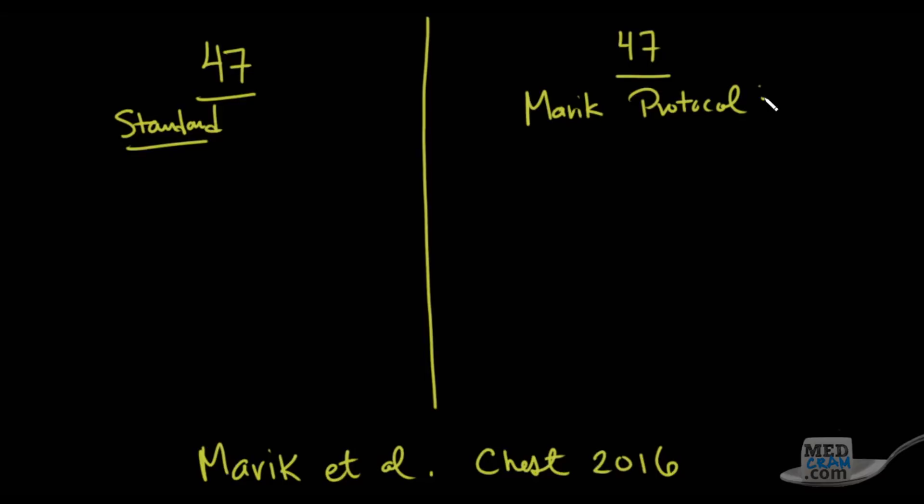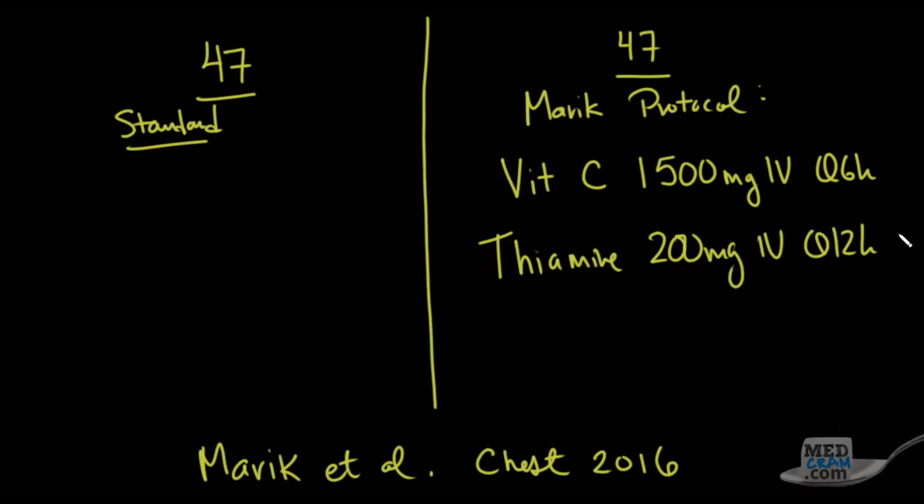So what is the Marik protocol? Well, the Marik protocol is actually pretty straightforward. It is vitamin C and it is 1,500 milligrams IV Q6 hours. And this is for four days or until the patient leaves the intensive care unit. The next thing that is given is thiamine and it's 200 milligrams IV Q12 hours. This is also given for those four days. And the reason why this is given is it's to help prevent a formation of kidney stones and crystallization in the kidneys. And this is a low risk of doing it but they wanted to make sure that it did not happen. And they've done safety trials and they've looked at this and it just didn't happen.